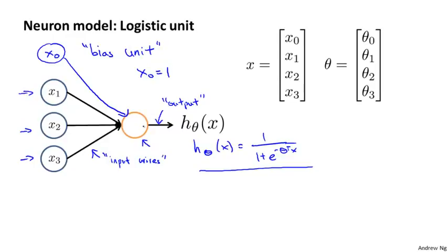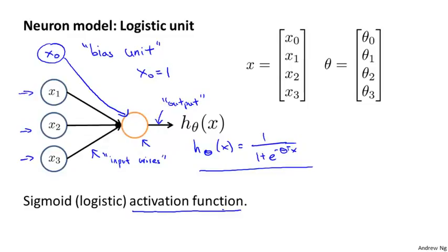Finally, one last bit of terminology. When we talk about neural networks, sometimes we'll say that this is a neuron or an artificial neuron with a sigmoid or a logistic activation function. So this activation function in the neural network terminology, this is just another term for that function, for that nonlinearity g of z equals 1 over 1 plus e to the negative z.